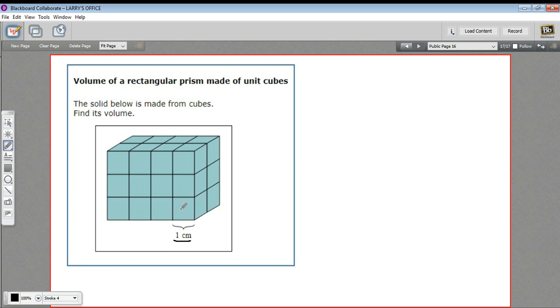When you have unit cubes, you can just count the unit cubes, and that's the volume of your prism. So however many 1 by 1 by 1 centimeter cubes there are here, that's how many cubic centimeters are in this rectangular prism.